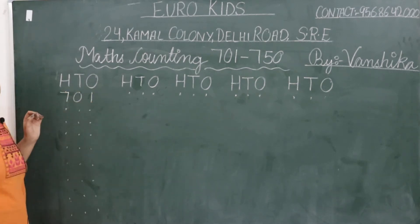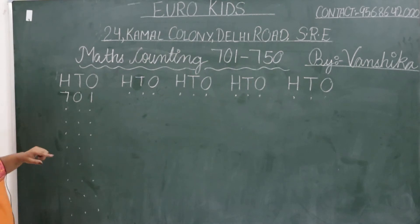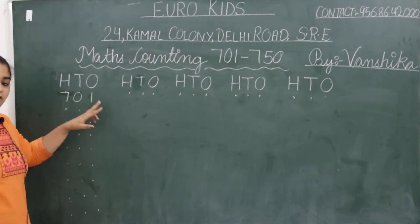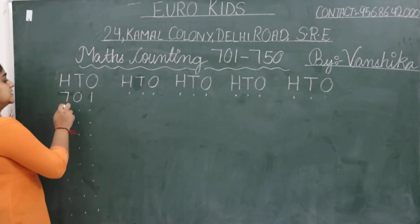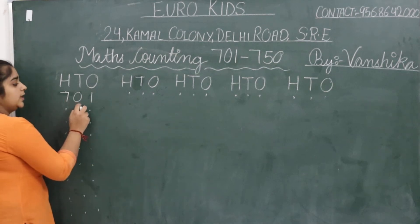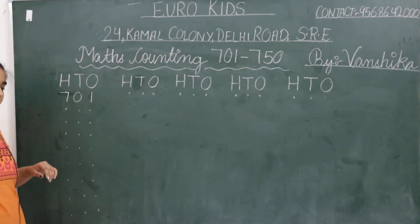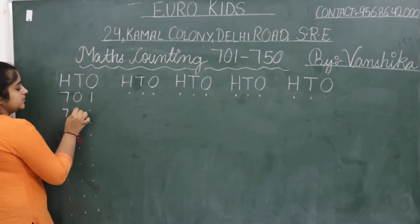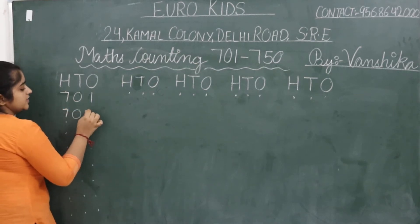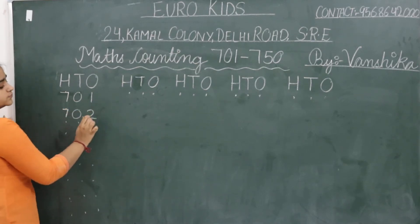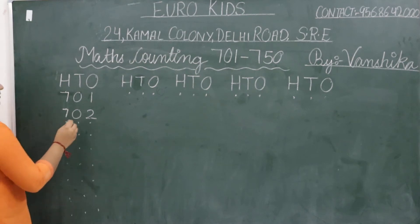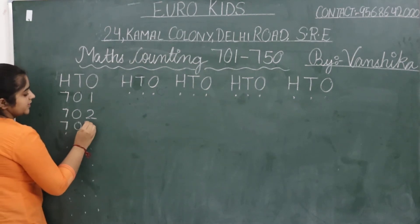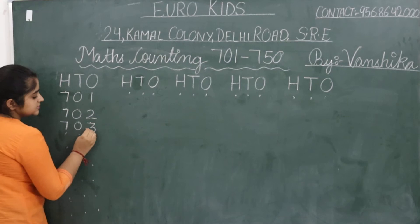701. Now, how do we write 701? 701. And how do we pronounce it? 701. Next is 702. Understood? 703.